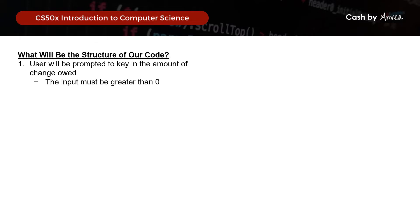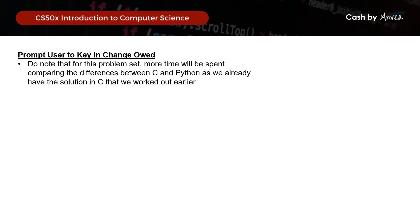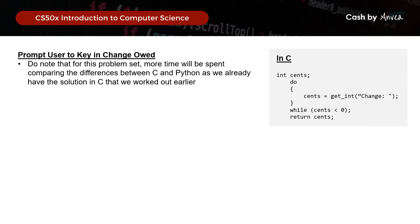So what will be the structure of our code? We need to prompt the user to key in the amount of change owed, and this must be greater than 0. Then we must calculate the number of quarters, dimes, nickels, and pennies. For this problem set, we will be focusing more on comparing the differences between C and Python syntax, since we already covered the solution in C in an earlier video. If you haven't watched that, watch it linked in the description before moving on.